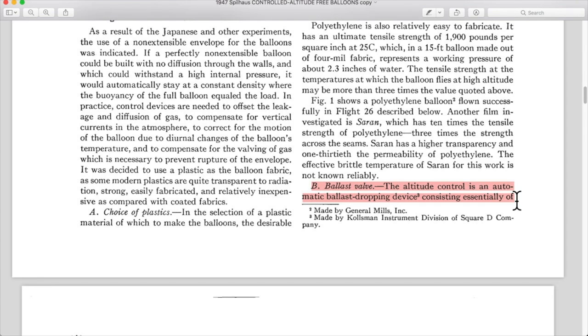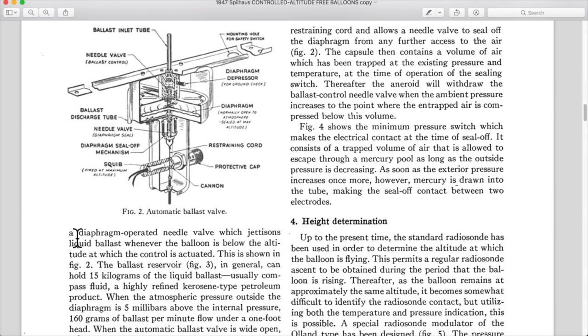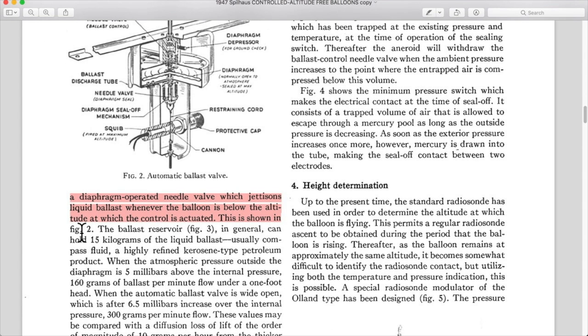Ballast valve. Now we're back into the mechanics. The altitude control is an automatic ballast dropping device consisting essentially of a diaphragm operated needle valve which jettisons liquid ballast whenever the balloon is below the altitude at which the control is actuated.